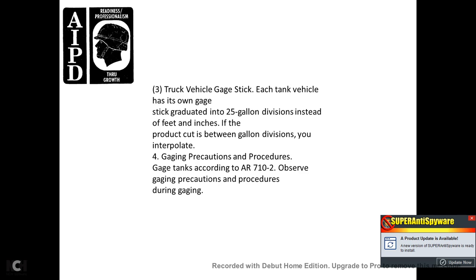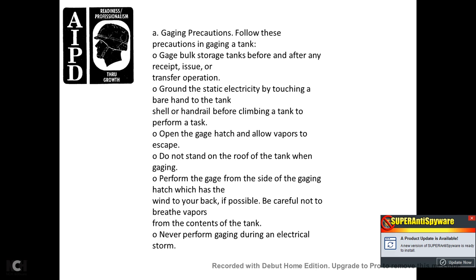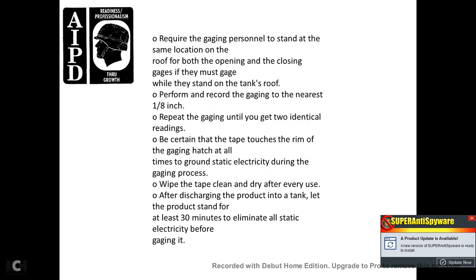16 & 17. Gauging precautions. Procedures for gauging tanks are in accordance with AR 710-2. Observe the following precautions: gauge bulk storage tanks before and after any receipt, issue, or transfer operations. Ground static electricity by touching a bare hand to the tank shell and handrail before climbing the tank. Open the gauge hatch and allow vapors to escape; do not stand on the roof of the tank when gauging. Perform the gauge from the side of the gauge hatch with the wind to your back if possible. Be careful not to breathe vapors from the contents. Never perform gauging during an electrical storm. Require gauge personnel to stand at the same location on the roof for both opening and closing gauges. Record gauging to the nearest one-eighth of an inch and repeat until you get two identical readings.